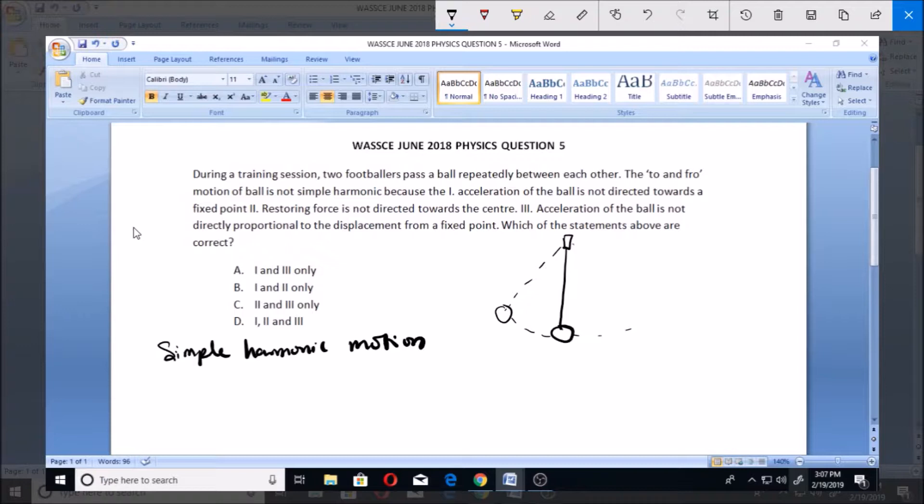When you have a rope and you tie a load to it, this is the load. So when you pluck this load like this, it's going to make this motion. So it will continue to move like this, continue to move. And the acceleration of this ball is directed towards the middle.